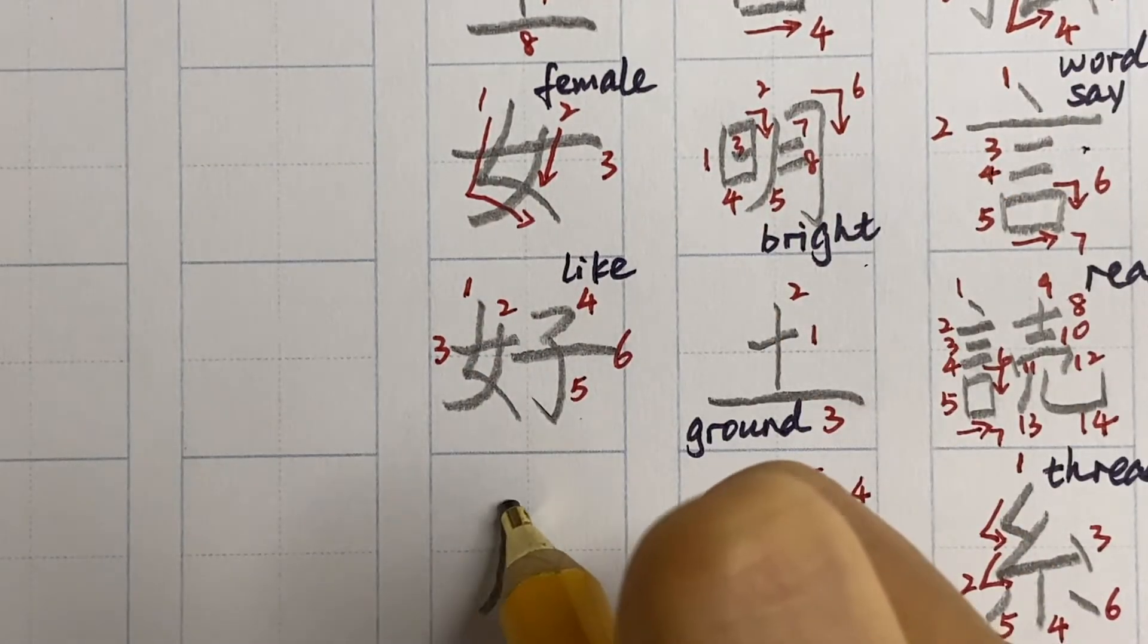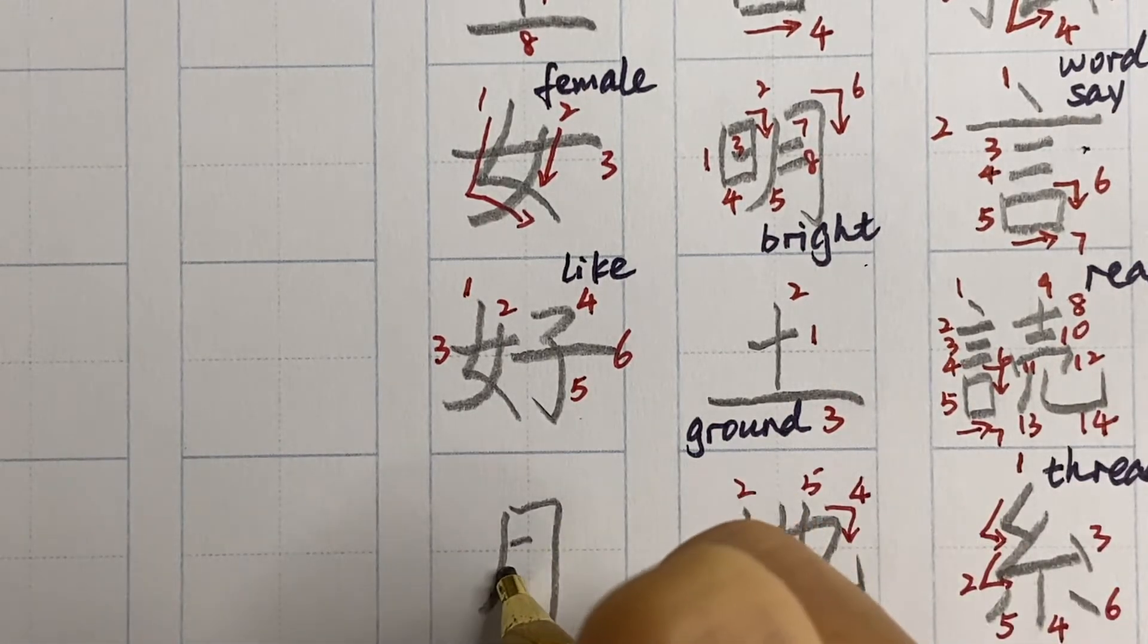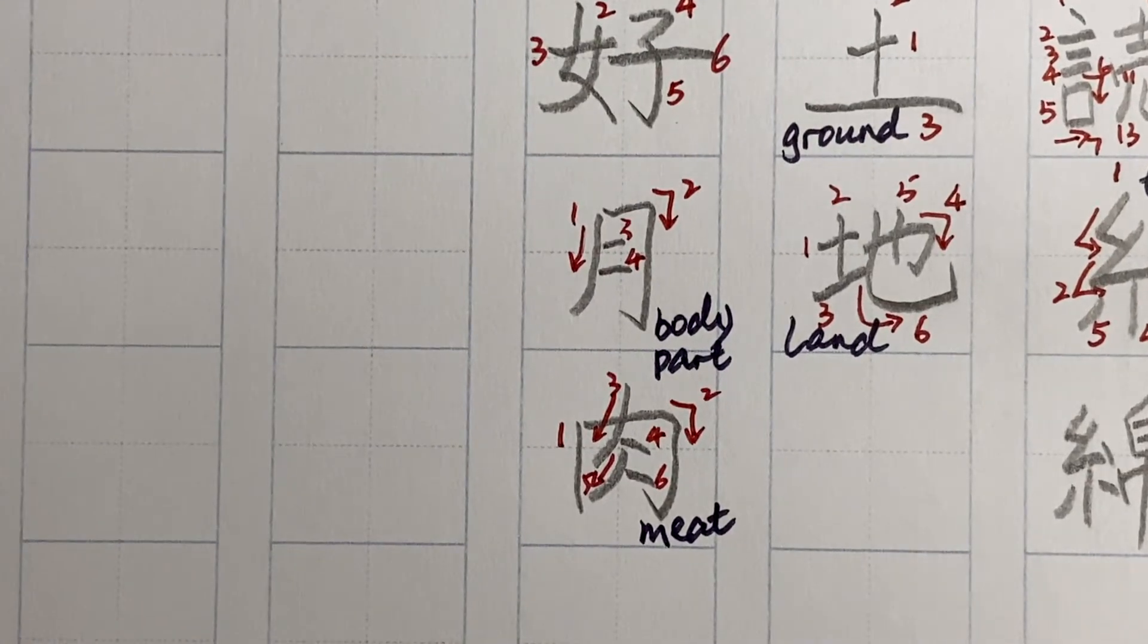The next component looks like the word moon, but actually it is the simplified version of niku: meat or flesh.